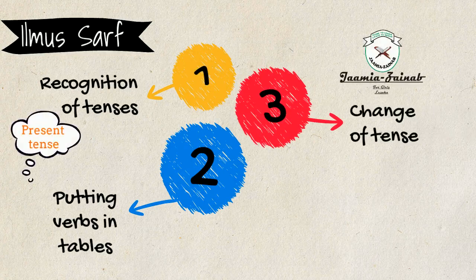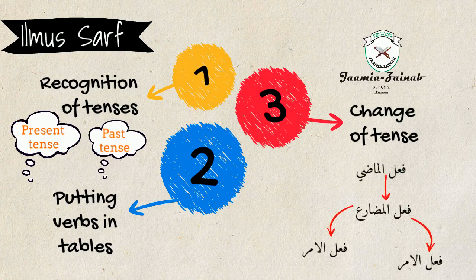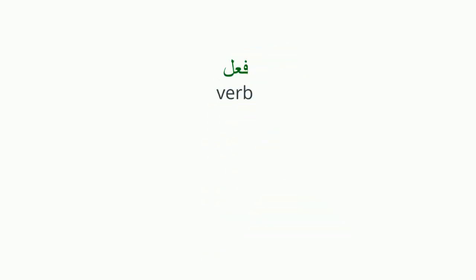So the next time you open the Quran, you will be able to see exactly which tense a word is in and which form it takes. The verb in Arabic is called the fi'l, and the tense in Arabic is called the sirah.